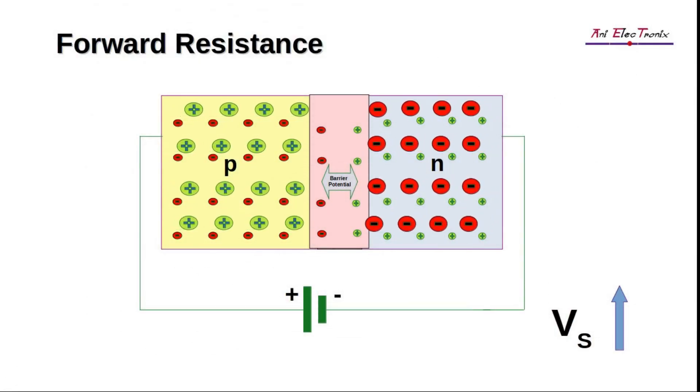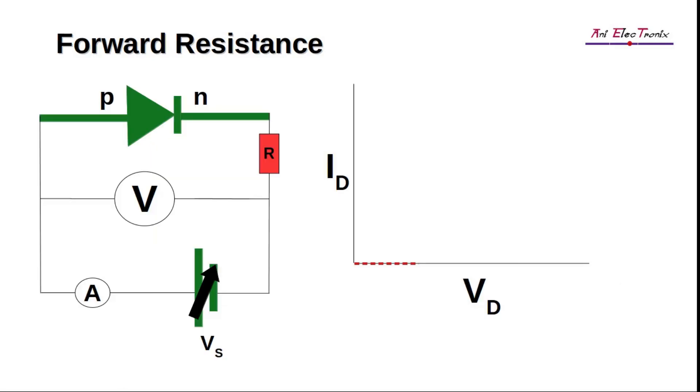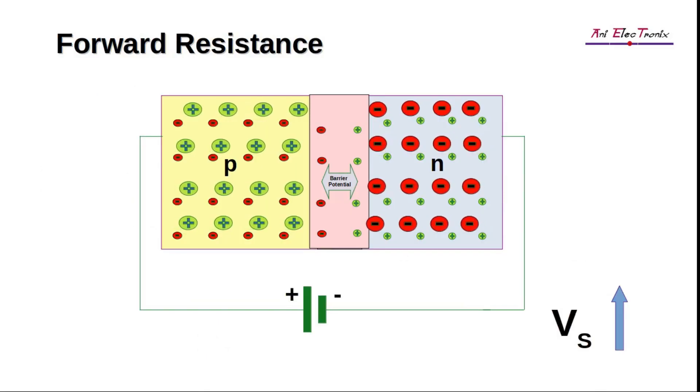With an increased forward bias voltage, the width of the depletion region shrinks. A diode begins to conduct once it crosses a certain threshold voltage or knee voltage. However, the depletion region cannot completely disappear. It remains thin. The resistance provided by the depletion region in forward bias is called forward resistance.